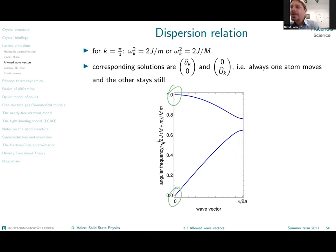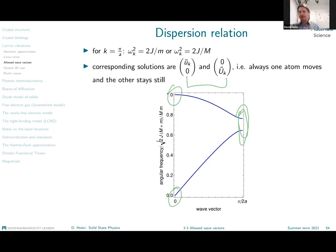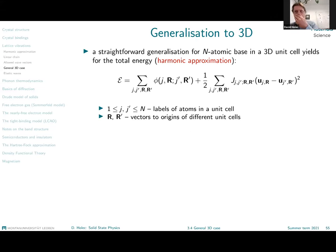For the optic mode, even at k=0 with infinite wavelength, the large and small atoms are displaced in opposite directions. The mutual distance between different atom types changes, creating a restoring force. Therefore, even at k=0 the system vibrates at non-zero frequency — the frequency is finite and this defines the optic mode.